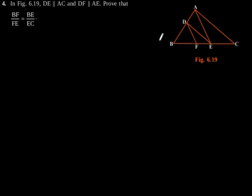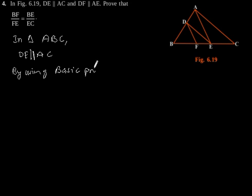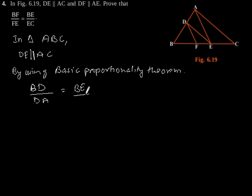So considering this figure, in triangle ABC, we have given in the question, DE is parallel to AC. So by using basic proportionality theorem, we will get BD by DA is equal to BE by EC.